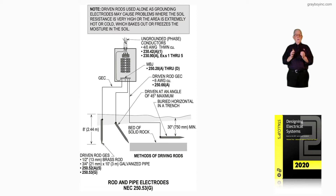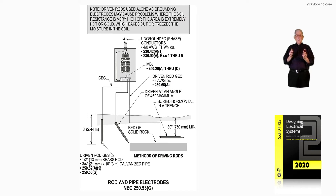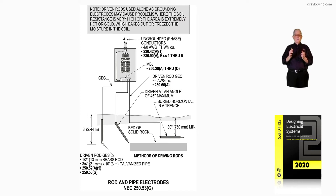250.4A5 says you cannot use the earth as a path for the fault current solely. You could connect to ground there, as stated in 250.54, as an auxiliary grounding electrode. And if it's a driven rod, that's how you're using the rod in this case.